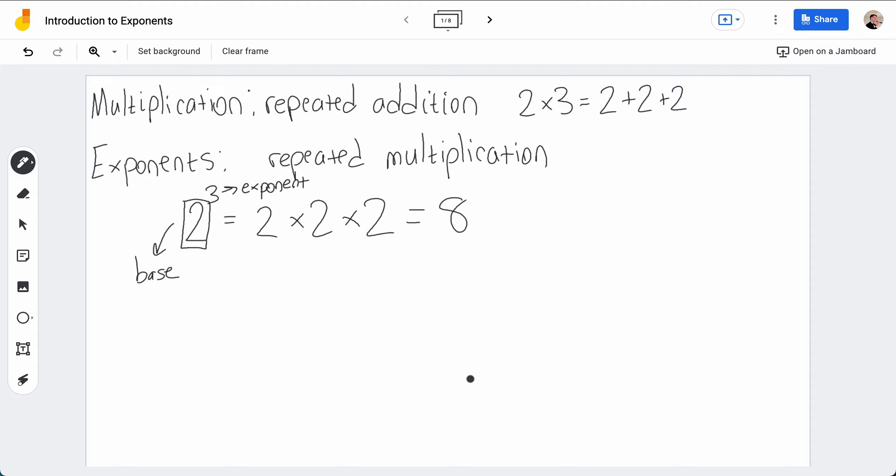Something to note here is for multiplication, if I flip the order, if I do 2 times 3, I get 2 plus 2 plus 2, but I can also do 3 times 2 and do 3 plus 3, add 3 to itself twice, and these are the same.